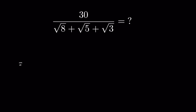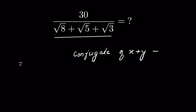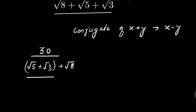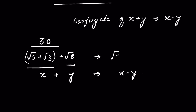To simplify this, we will first have to rationalize the denominator because the denominator has radicals. To rationalize it, we multiply and divide by the conjugate of the denominator. The conjugate of x plus y is x minus y. So we write it as 30 upon square root of 5 plus square root of 3 together, plus square root of 8. If we consider square root of 5 plus square root of 3 as x and square root of 8 as y, then the conjugate will be square root of 5 plus square root of 3 minus square root of 8.